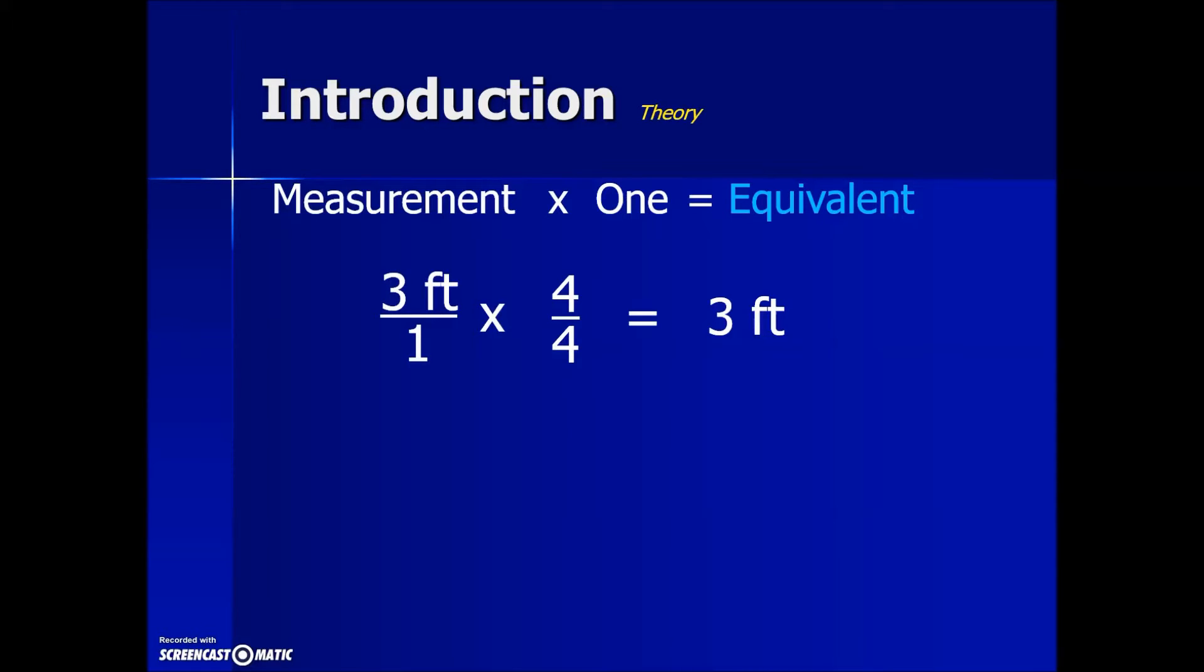It's understood that any number has a denominator of 1, and the rule for multiplying fractions together is to multiply the numerators together. So we will have 3 times 4 resulting in 12 feet in the numerator, and then multiplying the denominators, 1 times 4 gives us 4. If we would simplify this fraction, we would be back to the equivalent 3 feet that we had.